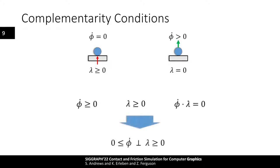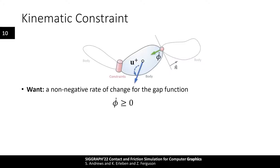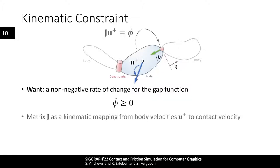The complementarity conditions are often written more succinctly, and our model must adhere to these rules to have physically valid contact behavior. To enforce that phi-dot is non-negative, we assume a kinematic mapping exists between body velocities and contact velocities. This mapping, represented by the matrix J, transforms body velocities into instantaneous changes in the gap function. This mapping is only valid at the current instant in time; if the contact location or direction changes, J must be updated. J is commonly referred to as the constraint Jacobian matrix, since it is the gradient of the constraint gap function phi.